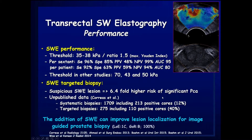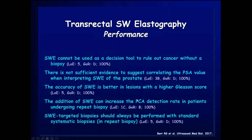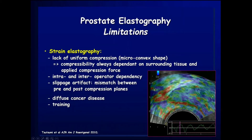The addition of shear wave elastography can improve lesion localization for image-guided prostate biopsy — that is the key point of this lecture. However, shear wave elastography should not be interpreted without considering conventional B-mode findings. A stiffness value above 35 kilopascals is suggestive of malignancy. There are no studies yet on the effect of lesion size on accuracy. Importantly, elastography cannot be used as a decision tool to rule out prostate cancer without biopsy.